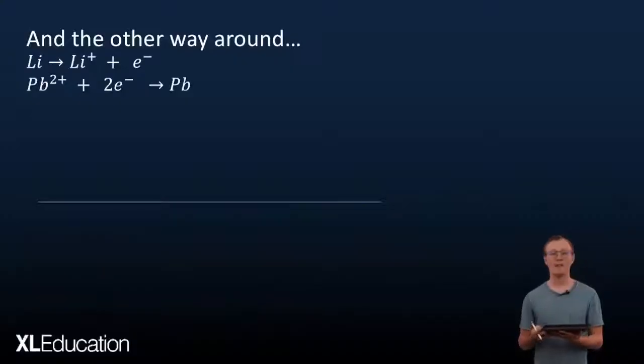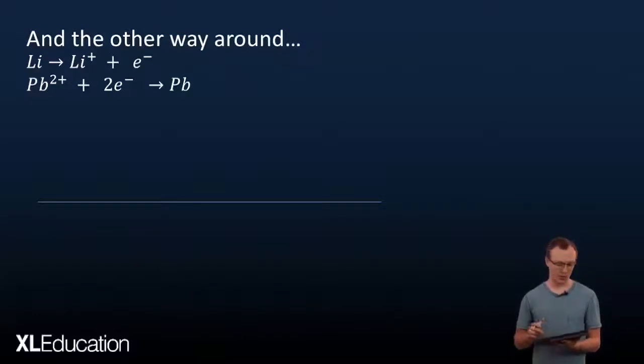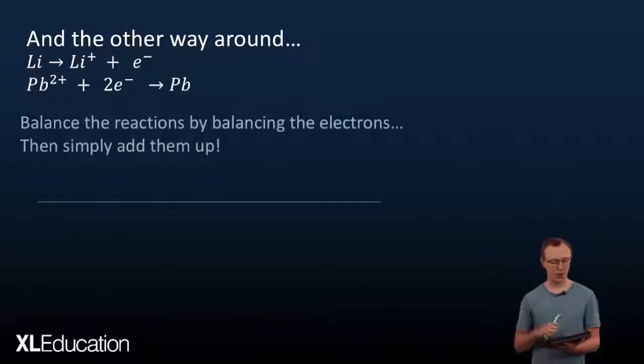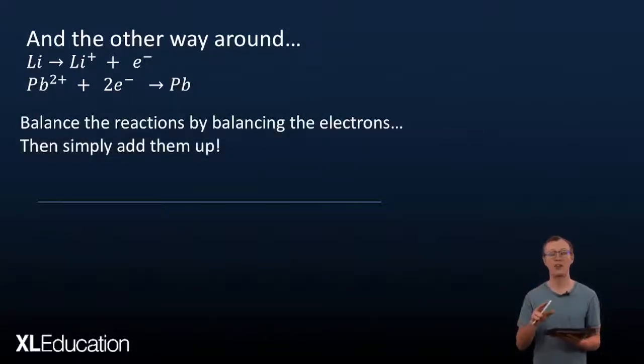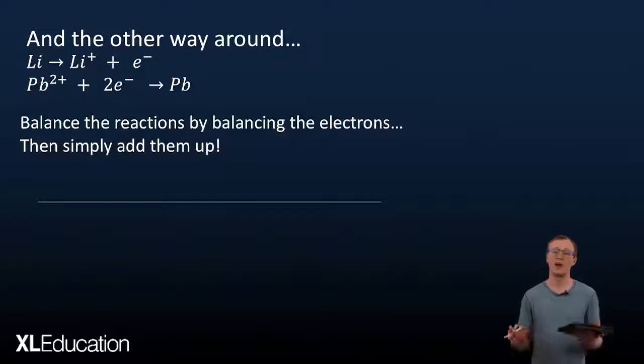Now let's see what happens when we go the other way — we have two half reactions and we want to find the overall reaction. We're going to balance the electrons on both sides of the half reactions and then simply add the two half reactions together to get the overall reaction. If our electrons are balanced, everything else in the two half reactions will automatically be balanced as well.